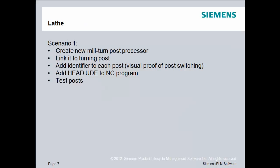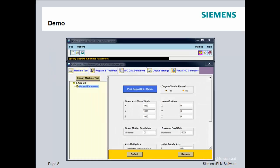In scenario one, we'll create a new mill-turn post processor. We will then link it to the turn post that we created in the last lesson. We will add an identifier to each post so that we have visual proof of when we switch control from the main post to the linked post. Finally, inside of NX we'll add the head UDE to the NC program to tell which operations need to go to the main post for milling and which operations need to go to the turn post for turning. Let's get started.